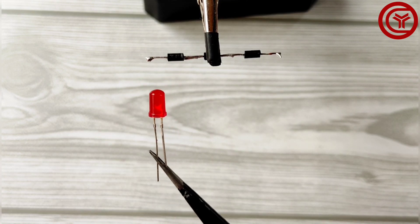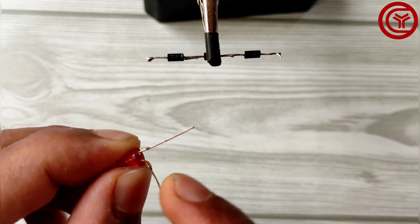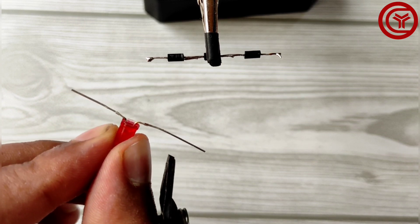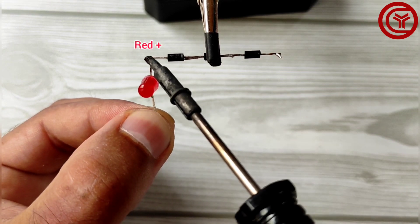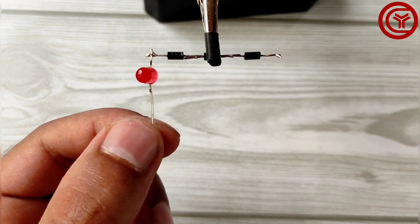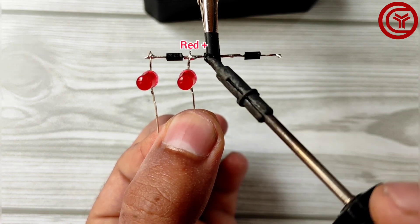Now take red LED and bend the legs. Then cut the excess of positive leg. Solder positive side of LED with diode. Now solder more three LEDs in same manner.